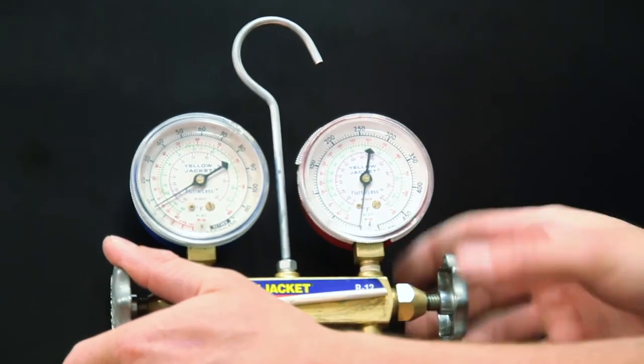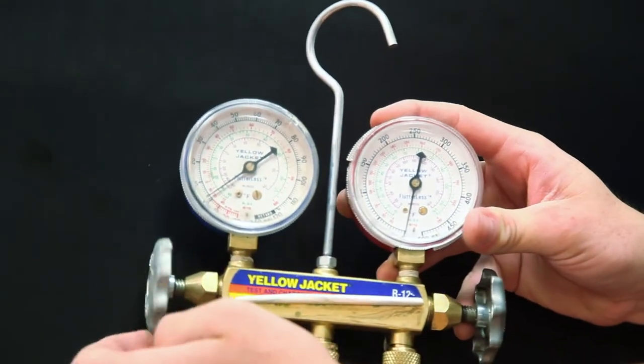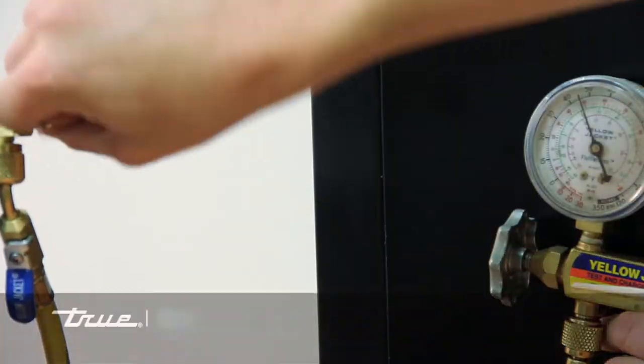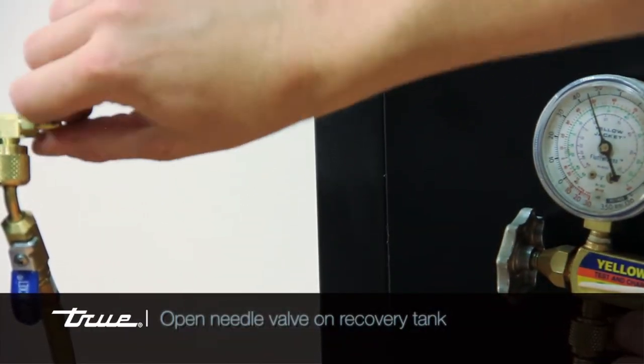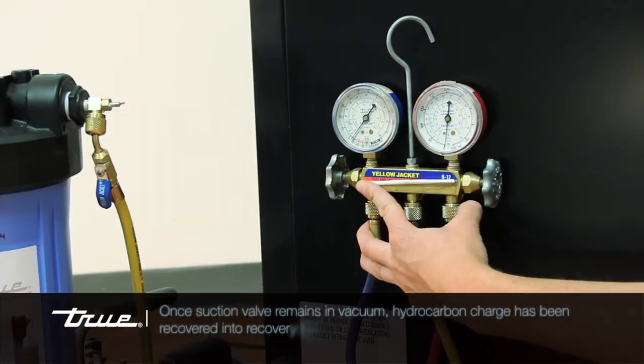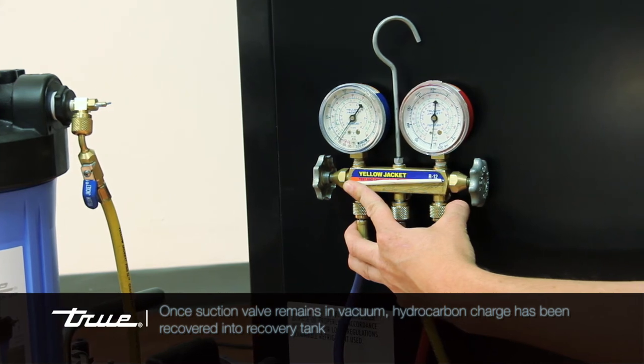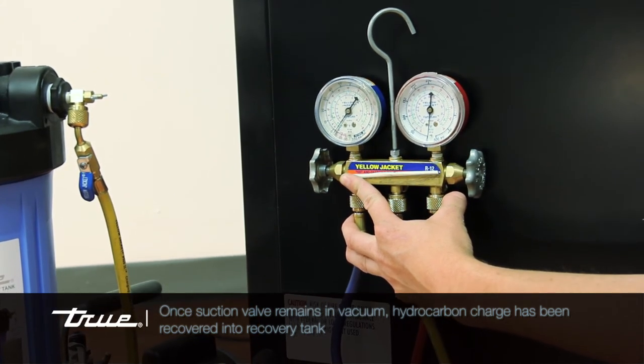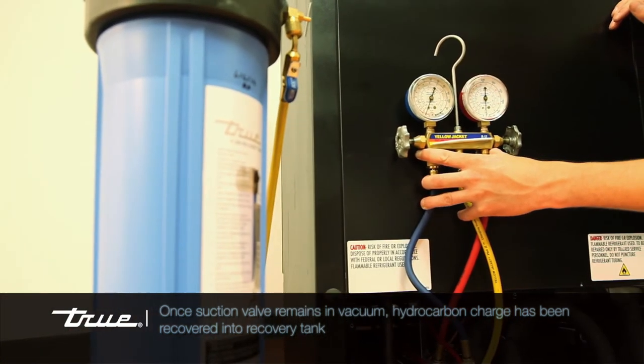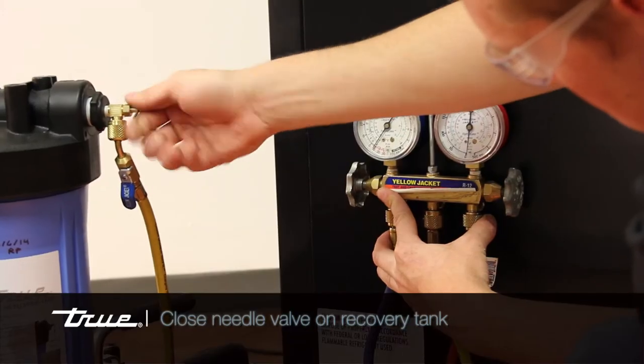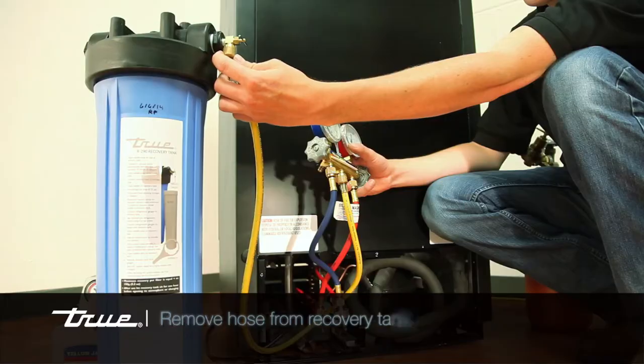Open your refrigeration gauge ports and then open the recovery tank needle valve to allow the refrigerant in the cabinet to be absorbed into the tank filter. Once the suction valve remains in vacuum, hydrocarbon charge has been recovered into the recovery tank. Close the needle valve on the recovery tank and remove the hose from the recovery tank.